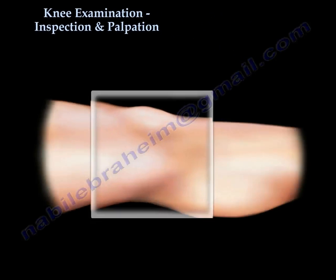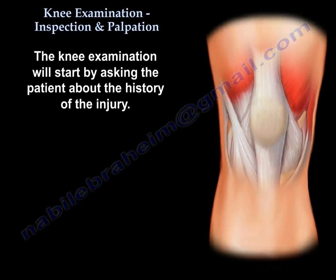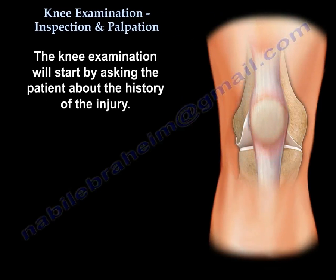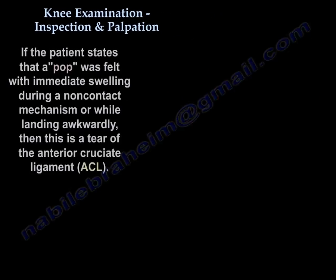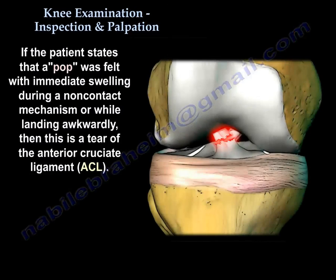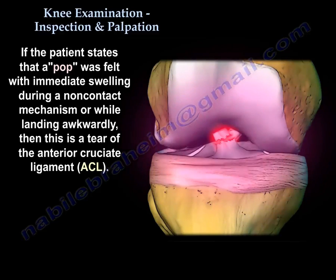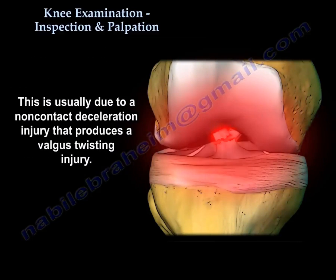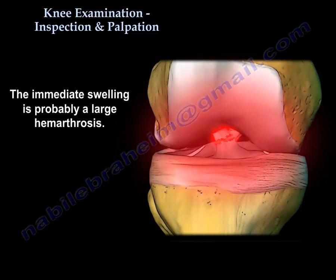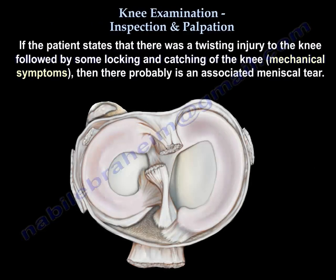The knee examination starts by asking the patient about the history of the injury. If the patient states they felt a pop, immediate swelling in a non-contact mechanism, or landed awkwardly, this is an ACL tear. This injury is usually due to a non-contact deceleration injury that produces a valgus twisting injury with immediate, large hemarthrosis.